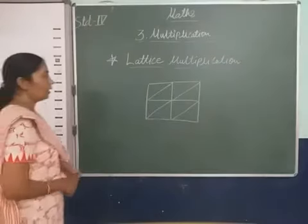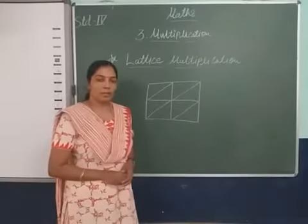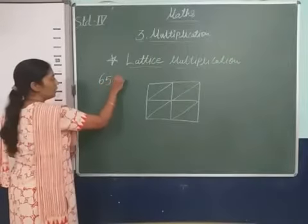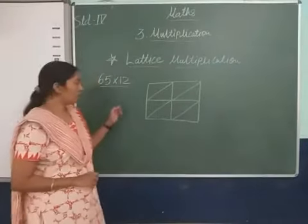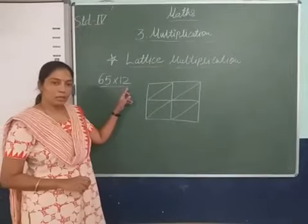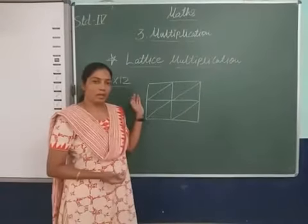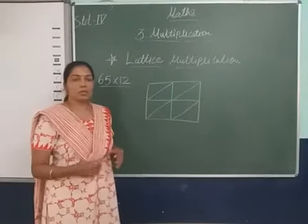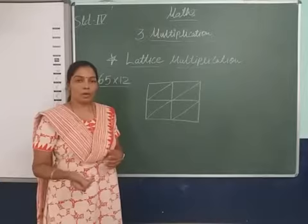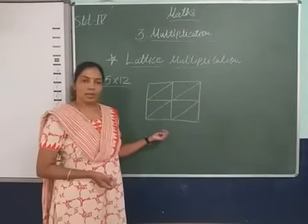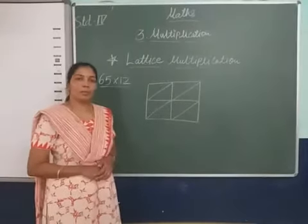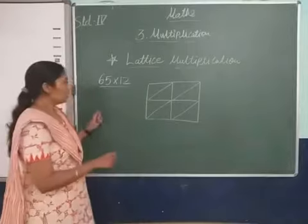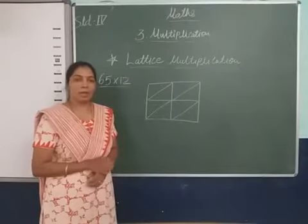Let me take the example of Lattice multiplication: 65 multiplied by 12. I take one simple digit number. When we are multiplying by 2 digits, the Lattice multiplication is used for when we multiply by 2 or more number digits. In your standard we are learning only Lattice for multiply by 2 digit numbers. So first of all 65 into 12.